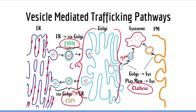I-cell disease is extremely rare — only about 30 cases have been documented in the medical literature. It is characterized by profound mental disability, clouded corneas, coarse facial features, and hand and skeletal deformities.